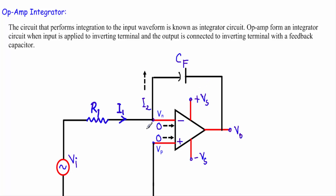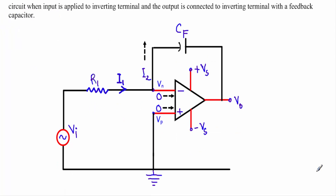In this operational amplifier integrator circuit, the output terminal will be directly connected with the inverting terminal through a feedback capacitor CF. As the capacitor is also a passive element, this feedback will be negative feedback. We apply input voltage VI with a series resistor R1 at the inverting terminal.